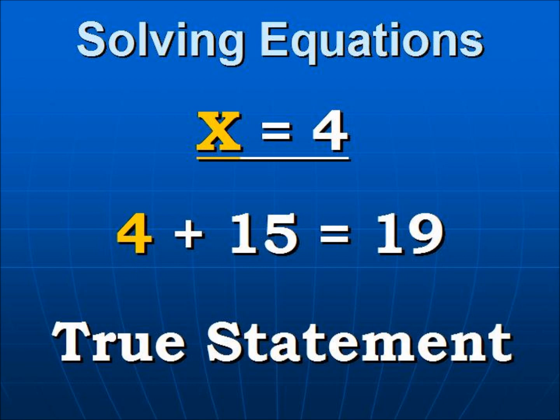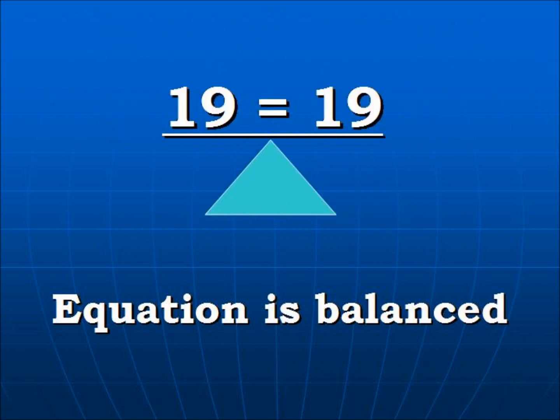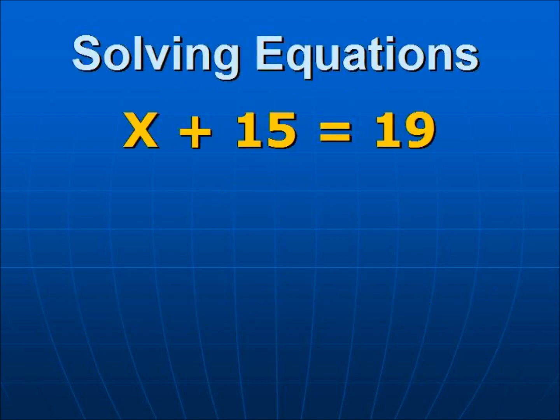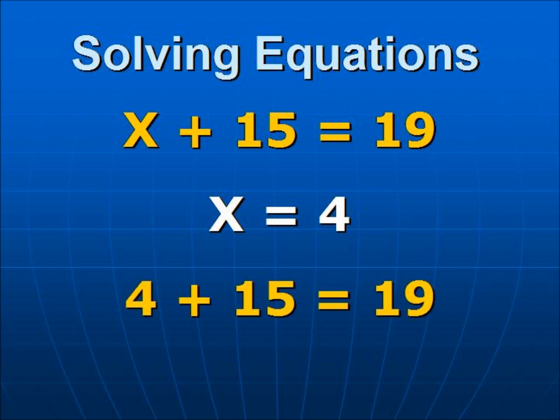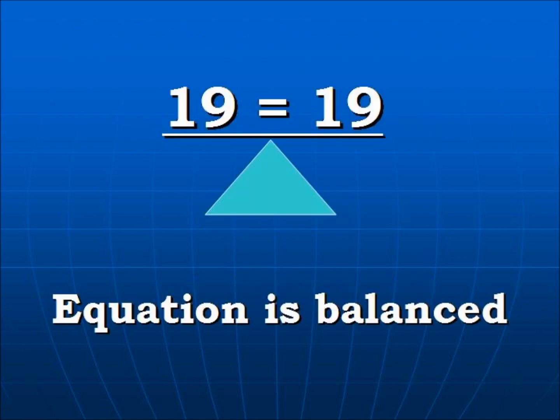As we said before the equation must stay balanced and this equation is balanced. 19 equals 19. So to sum everything up we have our original problem. We know that X equals 4. We plug that back into the original equation. 4 plus 15 equals 19 and we know that 19 equals 19 so this equation is balanced. Thus our solution is correct.